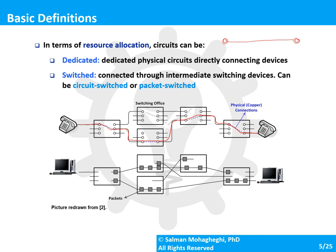The opposite of circuit switching is packet switching. In packet switching, you don't allocate resources beforehand. Instead, the data to be transmitted is broken into multiple pieces called packets, and every packet is routed from the source to the destination independently. There is no guarantee that all packets will follow the same route.